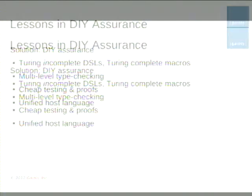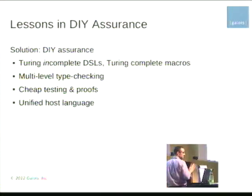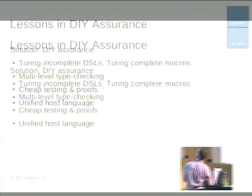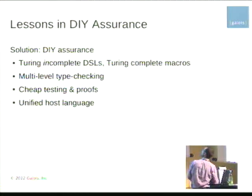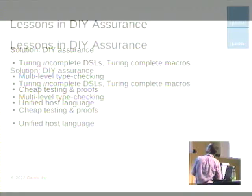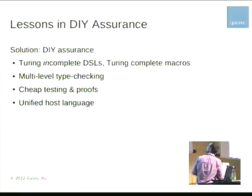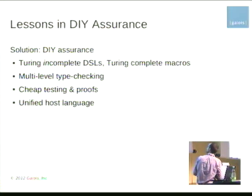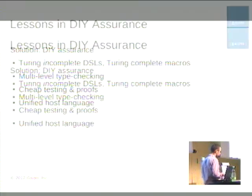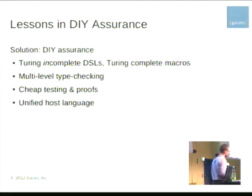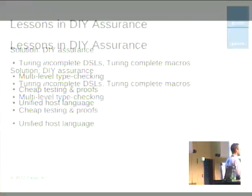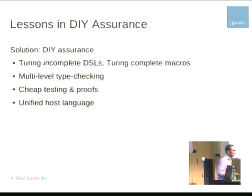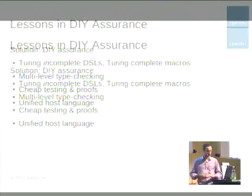In the remaining time, I want to talk about four lessons we learned: turning to Turing-complete DSLs — or rather, Turing-incomplete macros; multi-level type checking; cheap testing and proofs; and having a unified host language.